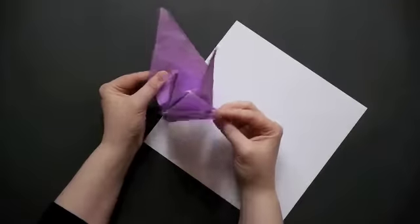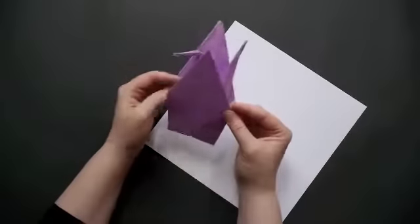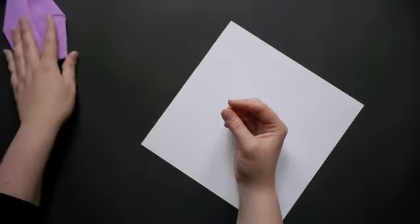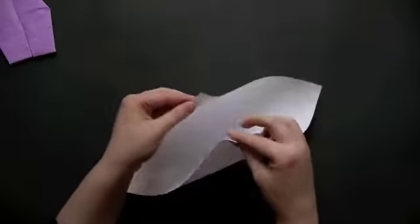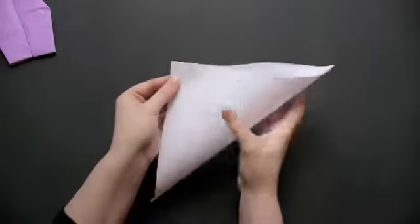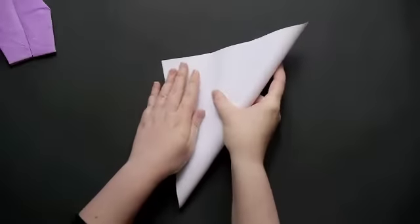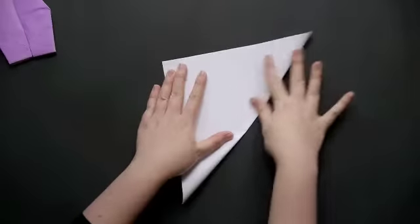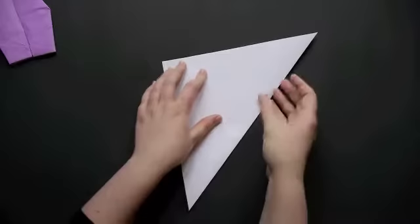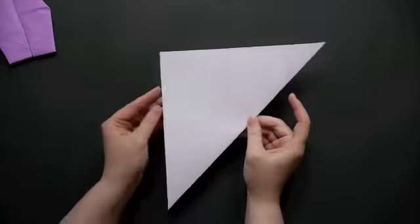These are instructions for making an origami crane. I'm going to take my square piece of paper and bring two opposite sides together to make a taco fold. I want to start out making my folds as precise as possible.